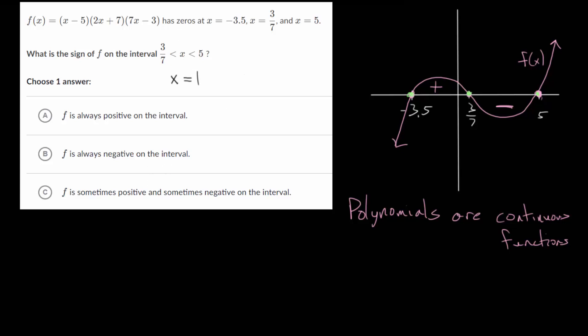So if we plug that into our function we're looking at f(1). So we have 1 - 5, then we have 2 times 1 + 7, and we have 7 multiplied by 1 - 3. And really we don't care about the exact value, we just care if it's positive or negative. Now we could actually compute the value.